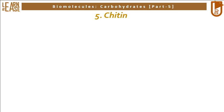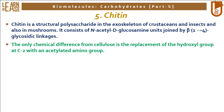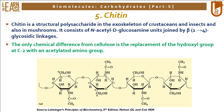The fifth type of homopolysaccharide is chitin. Chitin is a structural polysaccharide in the exoskeleton of crustaceans and insects and also in mushrooms. It consists of N-acetyl-D-glucosamine units joined by beta-1-4 glycosidic linkages. The only chemical difference from cellulose is the replacement of the hydroxyl group at C2 with an acetylated amino group. The image represents the structure of chitin — similar to cellulose, chitin possesses beta-1-4 bonds and an alternate arrangement of N-acetyl-D-glucosamine residues.